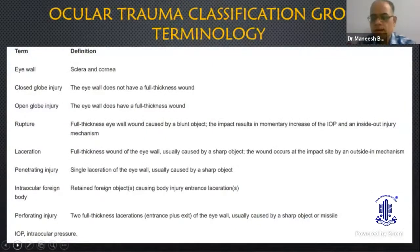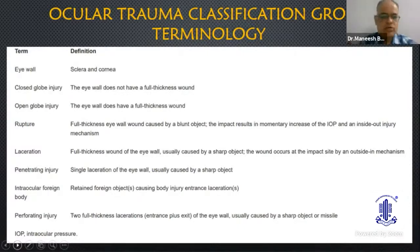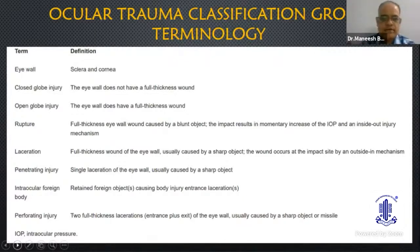As post-graduates, we should know ocular trauma classification terminology: what is an eye wall, which is sclera and cornea; closed globe injury, where the eye wall is not breached; open globe injury, where it is breached. Whether it is rupture, which happens because of severe blunt trauma; laceration, which is usually because of a sharp object and is a full thickness eye wall injury; penetrating injury, where there is a single laceration; perforating injury, where there is an entrance and exit wound; and intraocular foreign body, when there is a retained foreign object inside the eye.